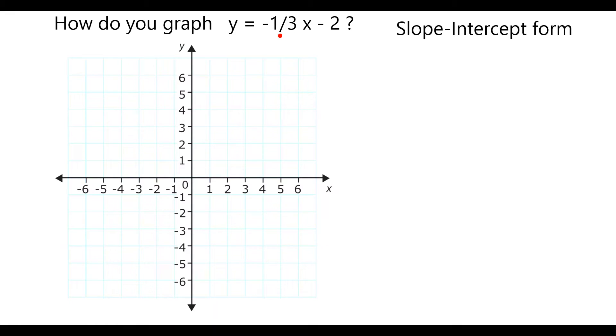We can graph a linear equation like this by interpreting it in slope-intercept form. This means it can be expressed in the form y equals something times x, the slope, usually represented with an m, plus b, or the y-intercept.